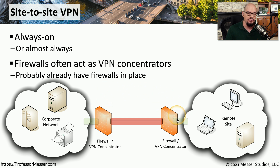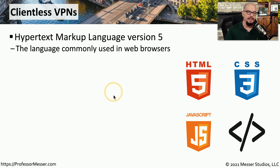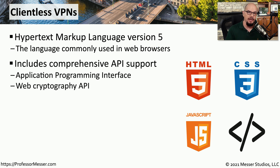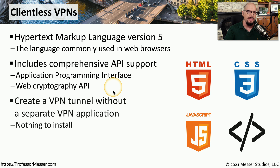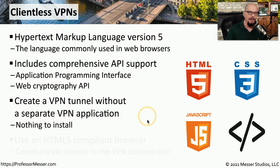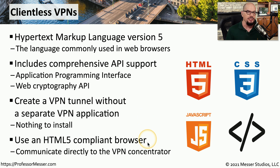Each firewall, as the VPN concentrator, would be responsible for decrypting that data and sending it into the local network. The latest browsers and devices are able to use HTML5, which includes enhanced capabilities such as API support and a web cryptography API. This means your browser can perform cryptographic functions within itself and effectively act as a VPN endpoint — without installing any additional software or requiring VPN support built into your operating system. Instead, you would have a clientless VPN that operates entirely from the HTML5 browser.